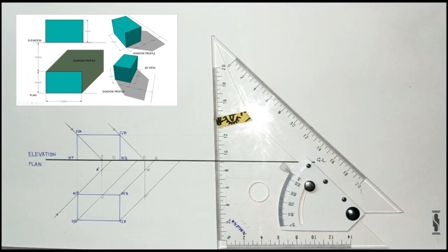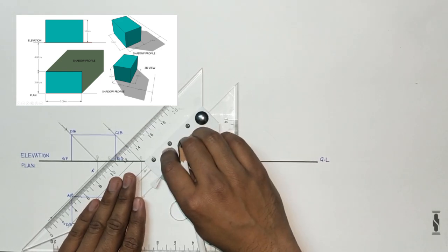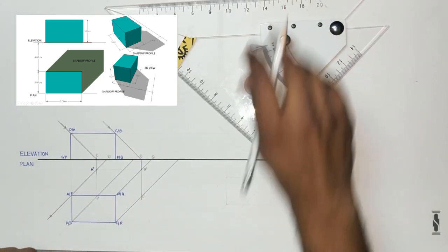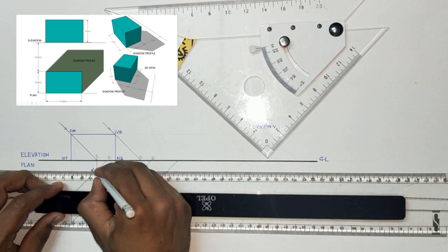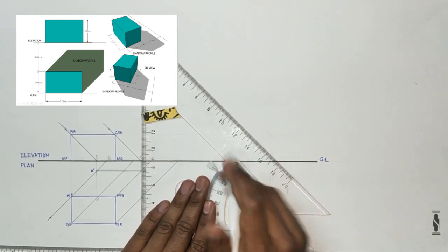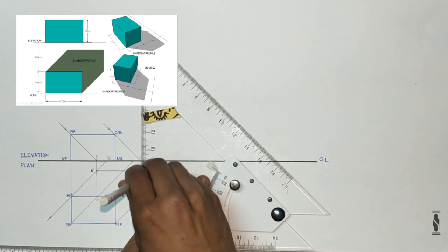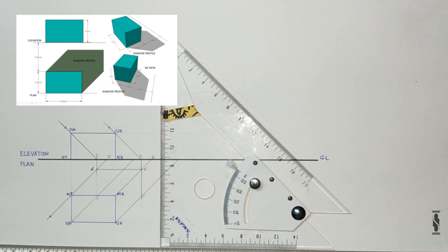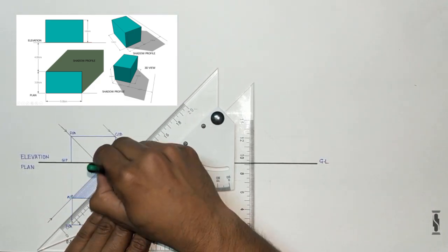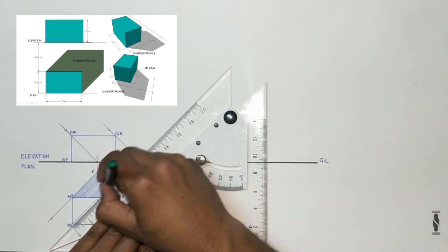The object rests on the surface PQRS on the ground, so the shadow of the object will start from the base of the object, that is PQRS. Now join the points P, A dash, B dash, C dash, and R to get the profile of the shadow created by the object. The shadow of point D lies in between the shadow of points A, B, and C, so it will merge into that shadow. Now hatch the shadow profile with low intensity lines to get the final output.